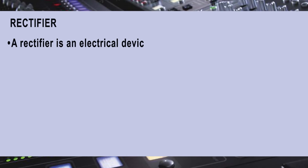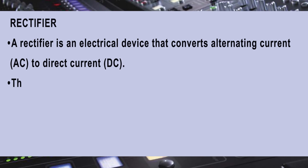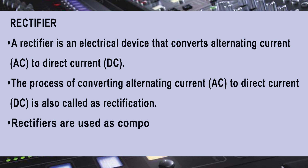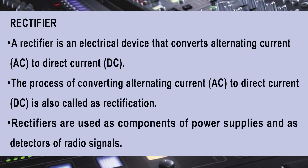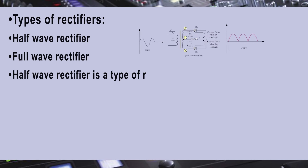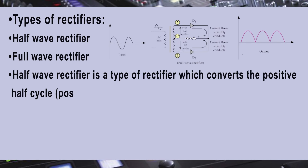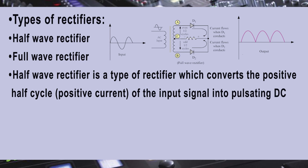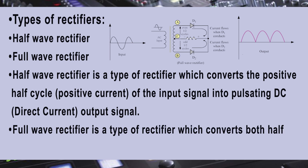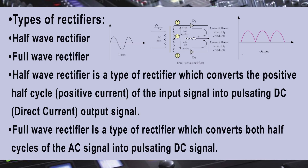Rectifier. A rectifier is an electrical device that converts alternating current to direct current. The process of converting alternating current to direct current is also called rectification. Rectifiers are used as components of power supplies and as detectors of radio signals, etc. The types of rectifiers are half wave rectifier and full wave rectifier. A half wave rectifier converts the positive half cycle of the input signal into a pulsating DC output signal. A full wave rectifier converts both half cycles of the AC signal into a pulsating DC signal.